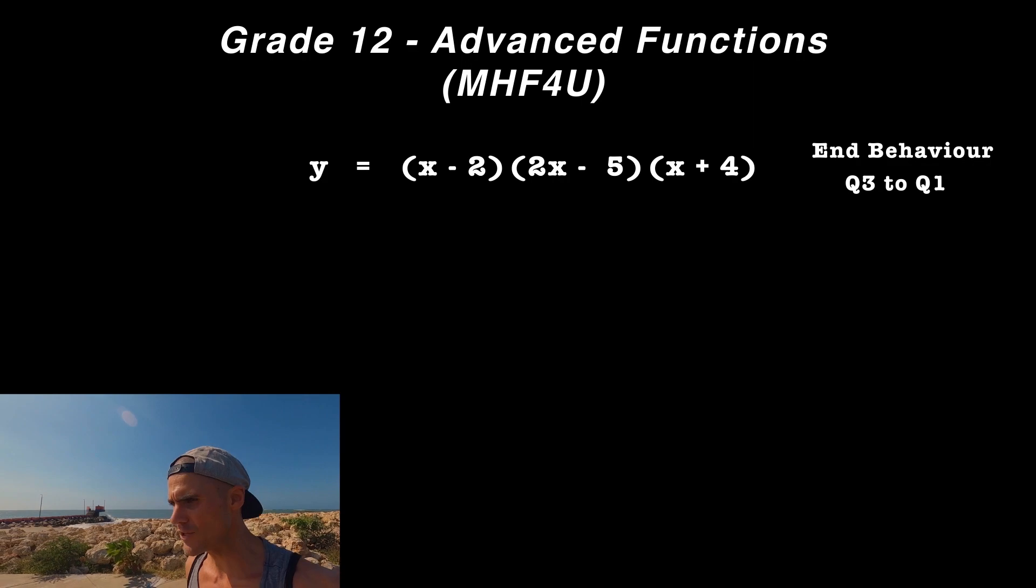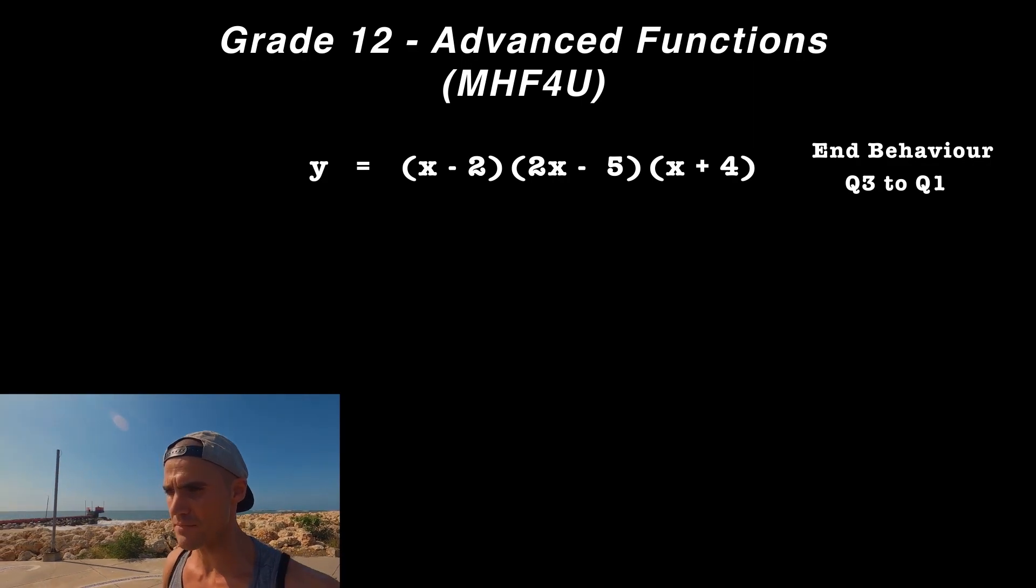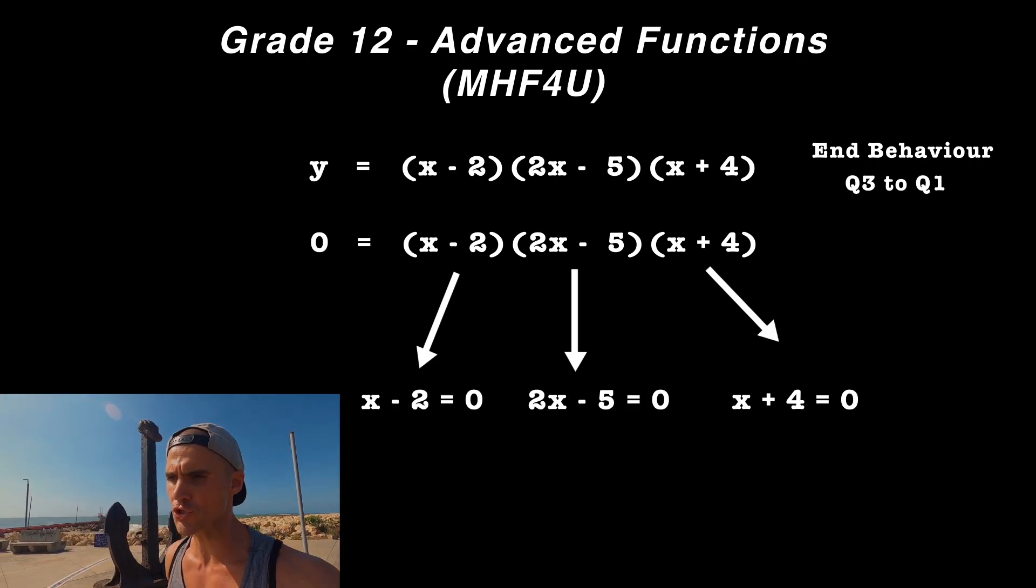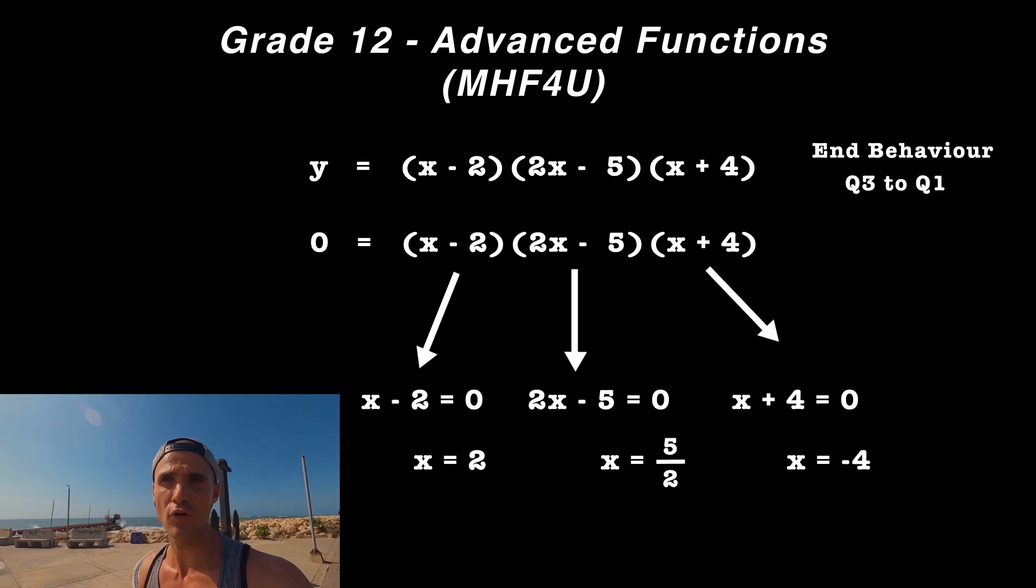You get the x-intercepts by finding when each factor equals 0. You would get 2, 2.5 or 5/2, and -4.